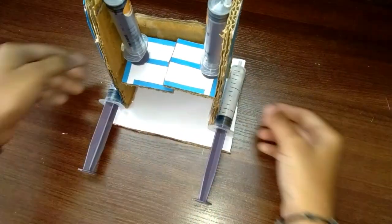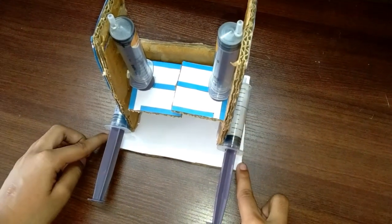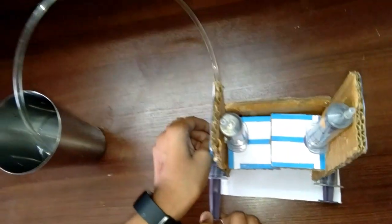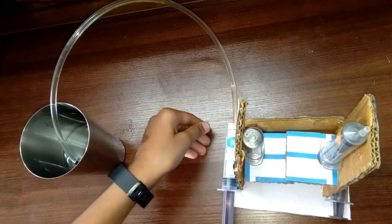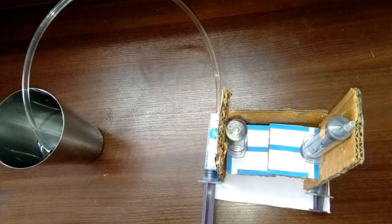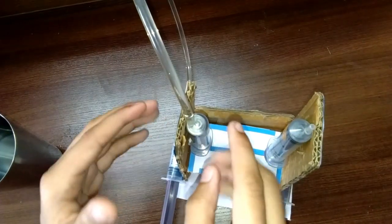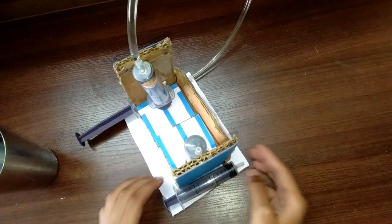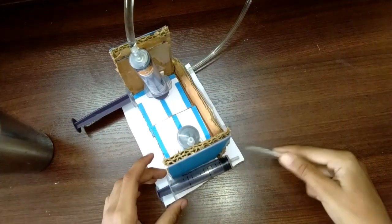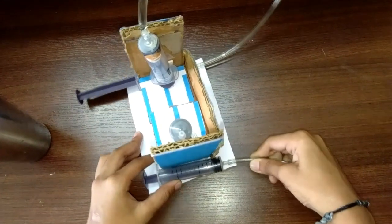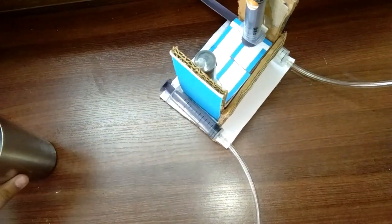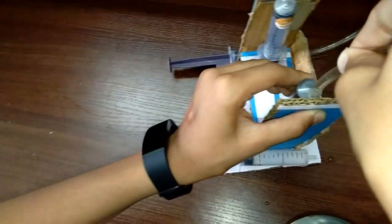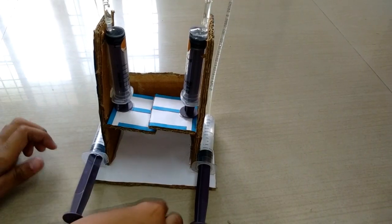Now fill the water and connect to the syringes. Do the same thing to this syringe also. First connect this pipe, dip it into the water, and pull the syringe. The hydraulic machine is ready. Now let's try it.